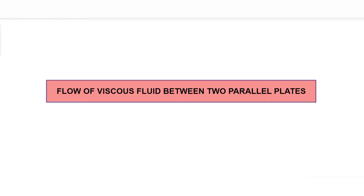In the previous video, we understood what we mean by viscous flow and saw the first case of viscous flow, which was flow of viscous fluid through a circular pipe. Now let's see another case, which is flow of viscous fluid between two parallel plates.